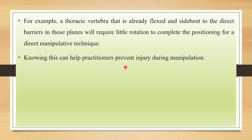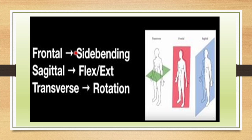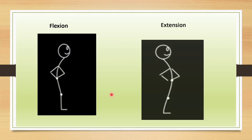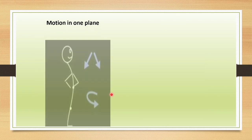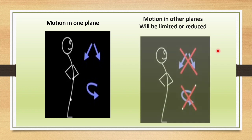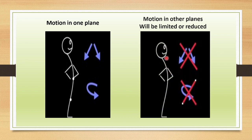Knowing this can help practitioners prevent injury during manipulation. To review the planes of motion: in the frontal plane there will be lateral flexion; in the sagittal plane, flexion and extension motions; and in the transverse plane, rotation motions. For example, if you are doing an extension motion — which occurs in the sagittal plane — motion in the other planes will be limited, meaning your side flexion and rotation motion will be reduced or limited.